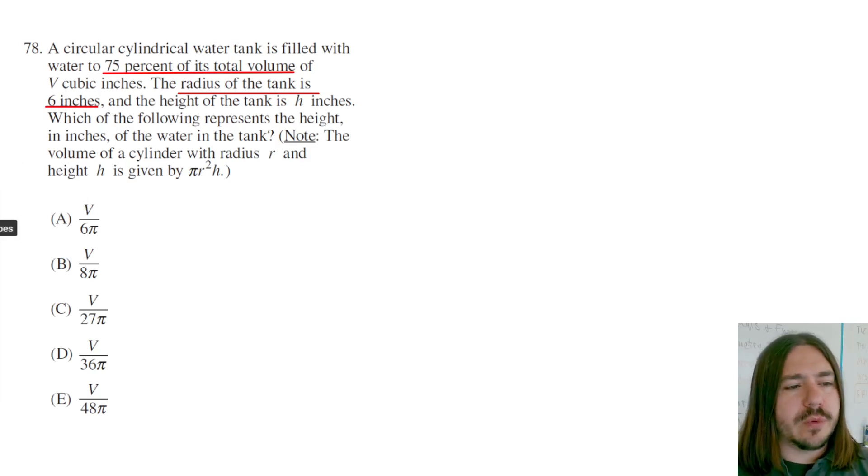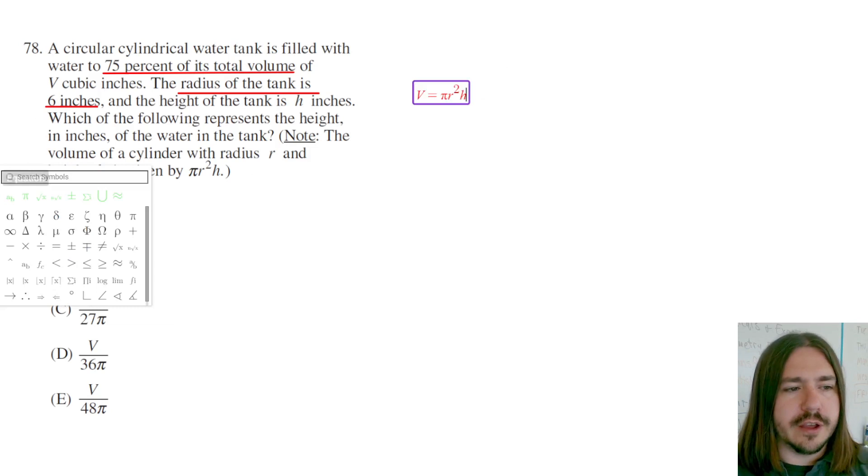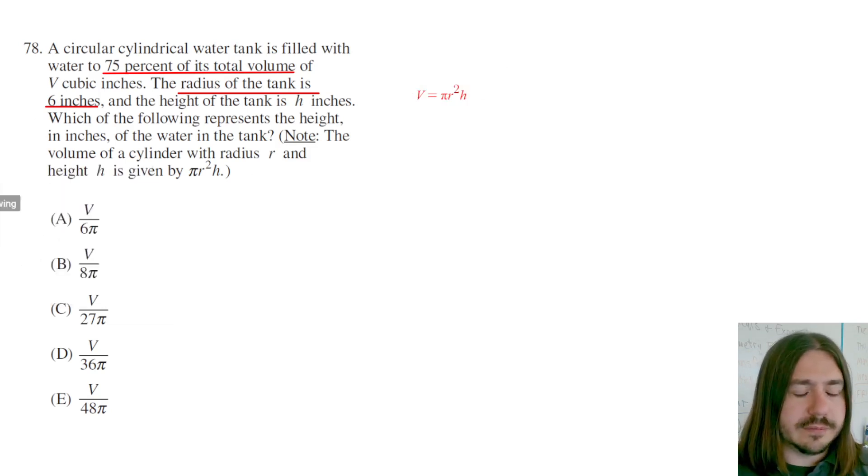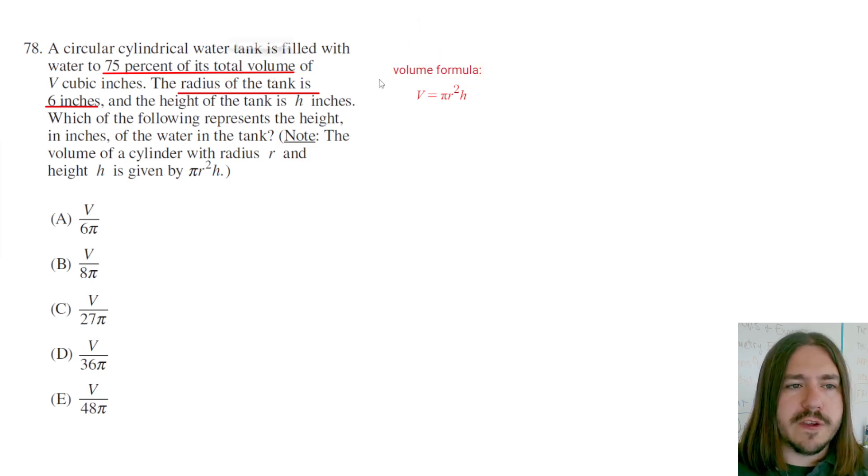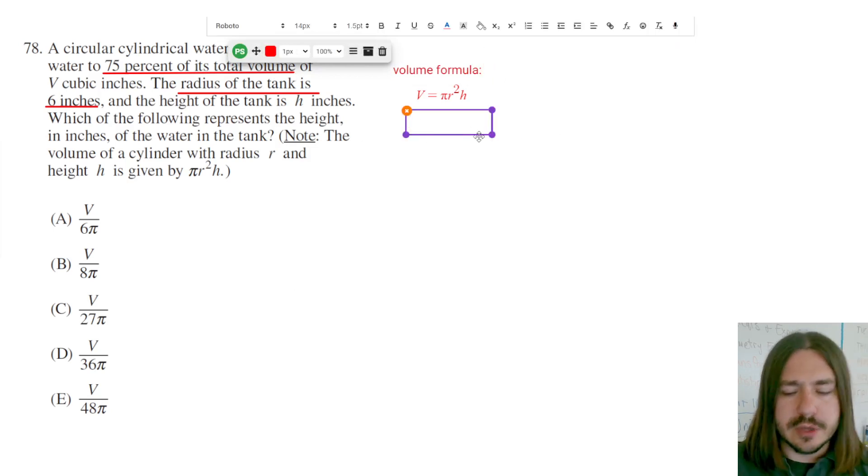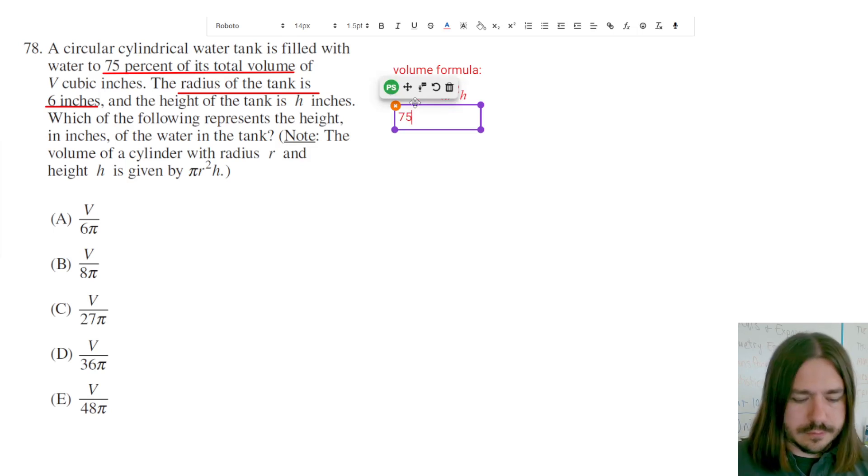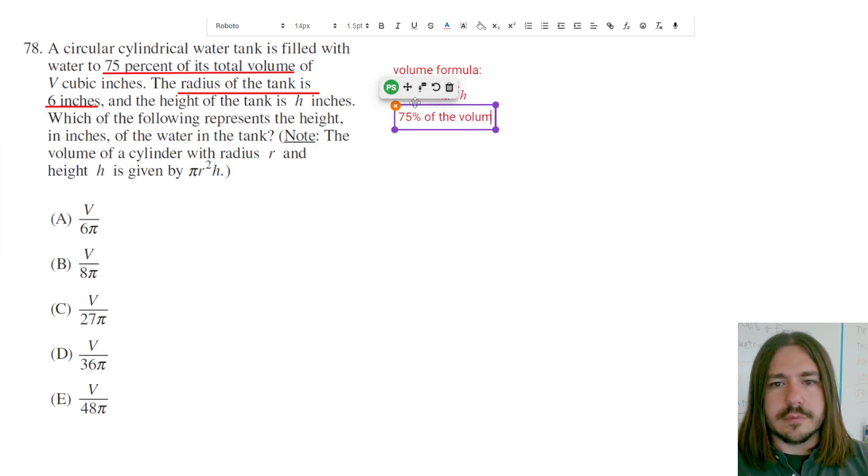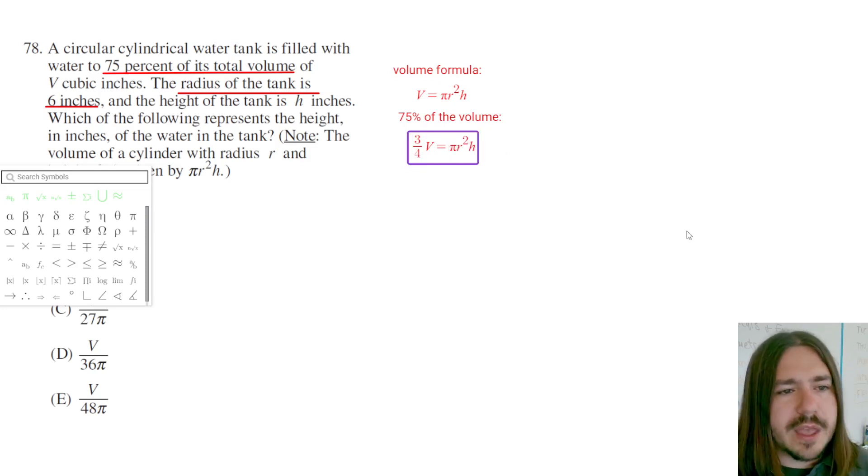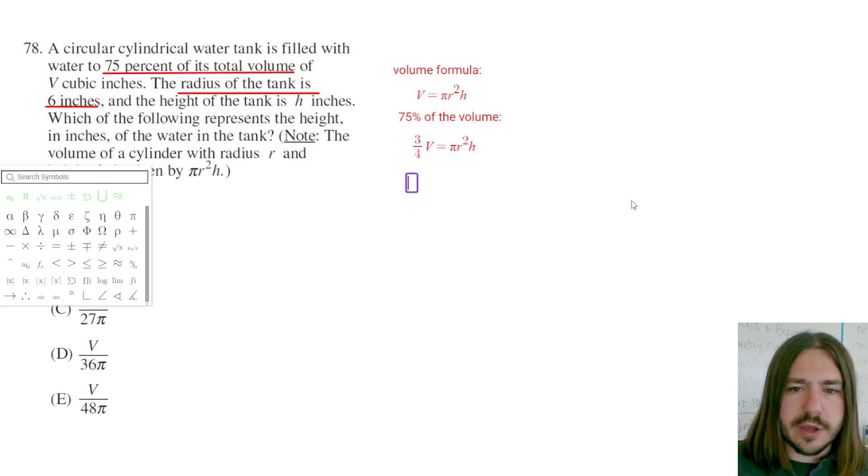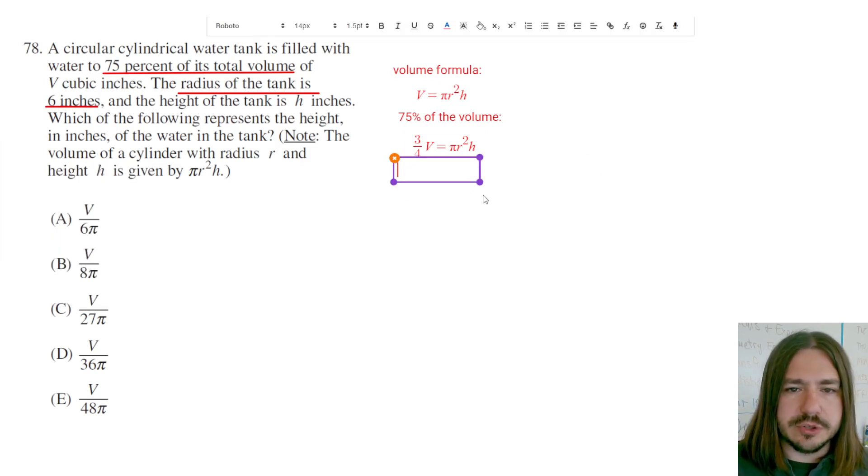So basically what we need to do here is first they give us the formula for volume of a cylinder, which is like a can shape. This is your generic volume formula. Now we know that we're only filling it up to 75% of the total volume. So we're going to multiply that 75% times v, which is going to be three-fourths. Three-fourths v equals pi r squared h, and then it says that the radius is 6 inches. So we're going to make that substitution where r is 6.